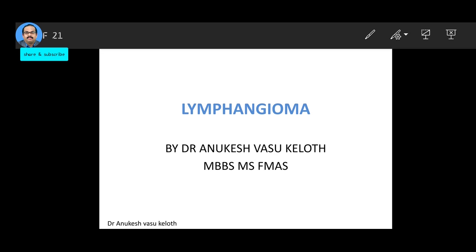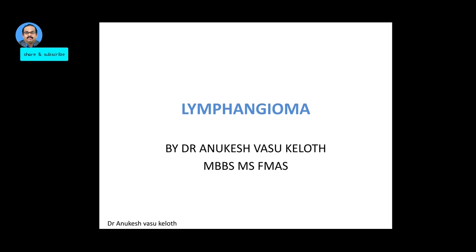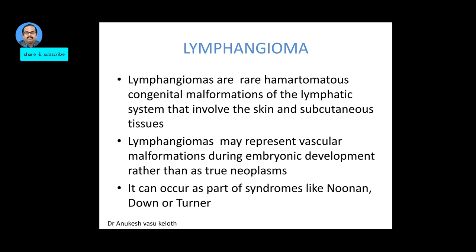Today we are going to talk about lymphangioma. A lymphangioma is a rare hamartomatous congenital malformation of the lymphatic system. It involves the skin and subcutaneous tissue. It is not a true tumour; it is a vascular malformation which occurs during embryonic development. It can occur as part of syndromes like Noonan syndrome, Down syndrome, or Turner syndrome.